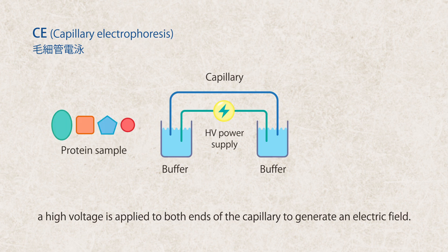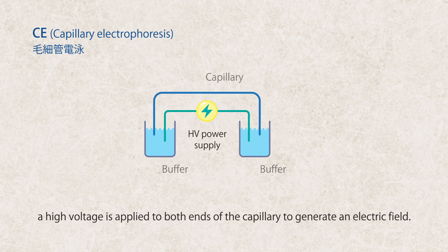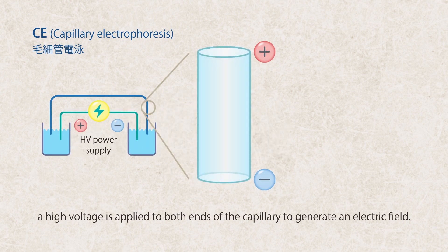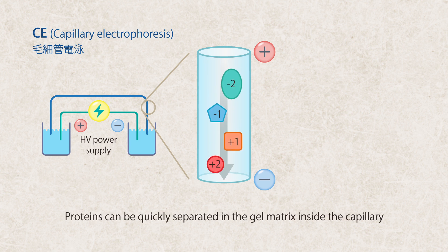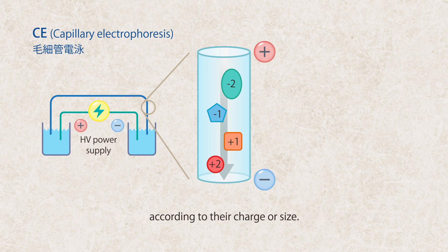In capillary electrophoresis, a high voltage is applied to both ends of the capillary to generate an electric field. The greater the field strength is, the faster the molecules migrate. Proteins can be quickly separated in the gel matrix inside the capillary according to their charge or size.